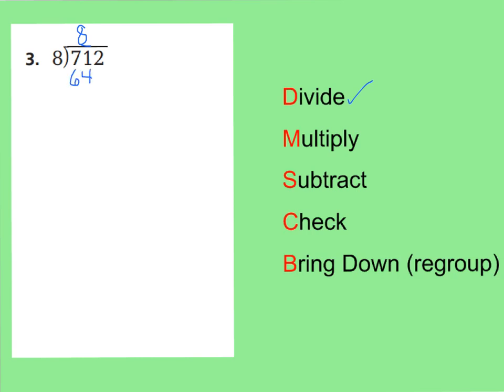That means I used up 64 of my tens pieces. Next we're going to subtract to see how many tens pieces are left. So if I subtract 71 minus 64, I'm going to have 7 pieces left. That was our subtract step. Now let's check: 7 is less than 8, so I'm doing well right now.